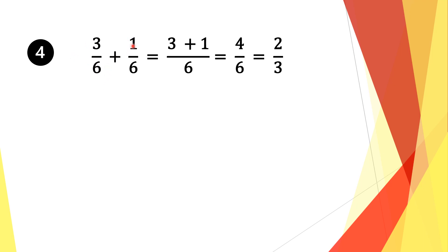Let's move on to equation 4. We have 3 sixths plus 1 sixth. Again, in these fractions we have a common denominator of 6. So we take 6 as a common factor. 6 divided by 6 is 1, and 1 times 3 is 3. We move along the plus sign, then do the same thing for the second fraction. 6 divided by 6 is 1, and 1 times 1 is 1. We add the numerators: 3 plus 1 is 4. We bring along the denominator 6. Now top and bottom are both divisible by 2, so 4 divided by 2 is 2 and 6 divided by 2 is 3. So our solution is 2 thirds.